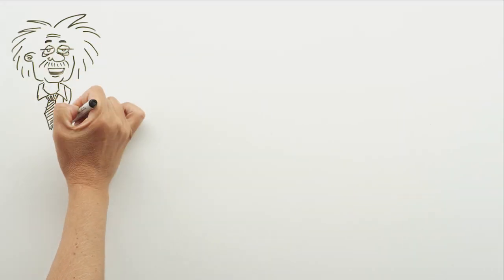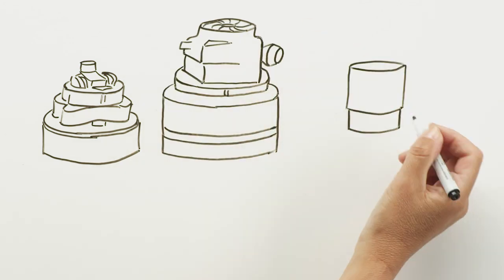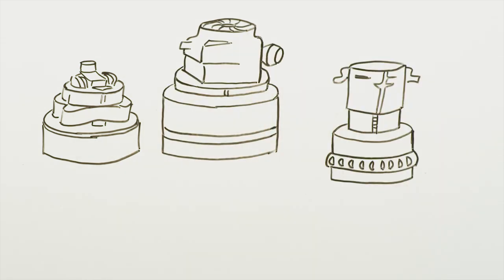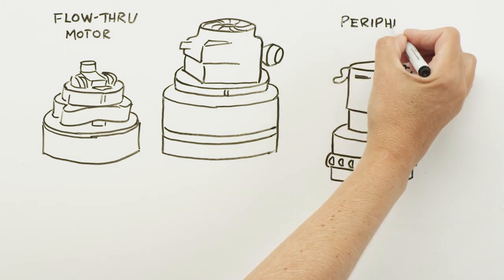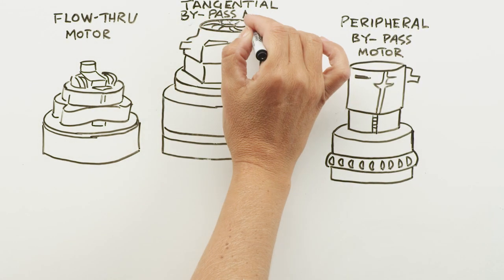Do you remember we asked you which of these three vacuum motors performs best? These three motor types are called the flow-through motor, the peripheral bypass motor, and the tangential bypass motor.